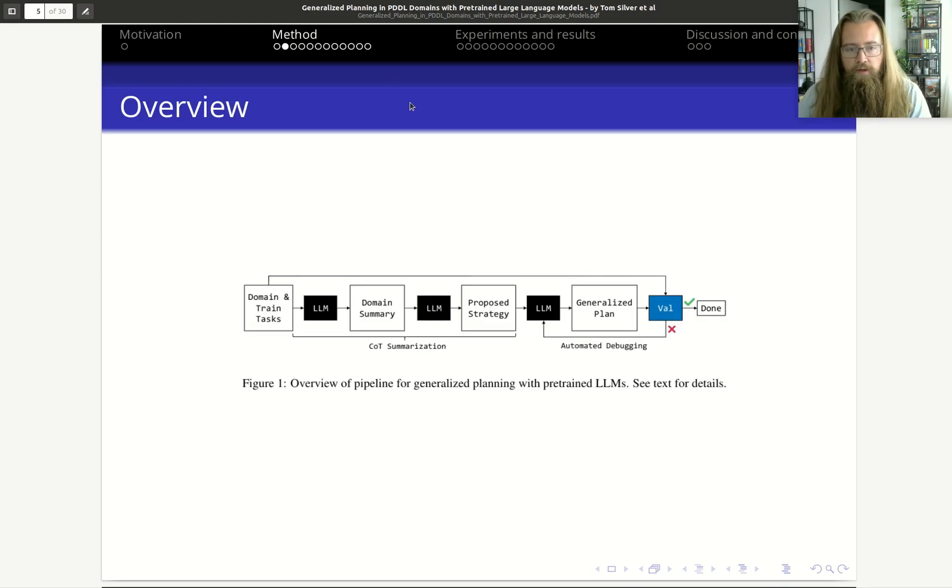How do you do this? This is the pipeline they use. They have a domain, they give domain train tasks, they ask the model to summarize the domain, and they ask the model to propose a strategy. Then based on this strategy, it's supposed to generate a program, which is here, the generalized plan component. Then they have this automated debugging to make sure that this generalized plan is actually correct. We'll see each of these parts more in detail later.